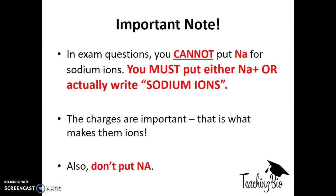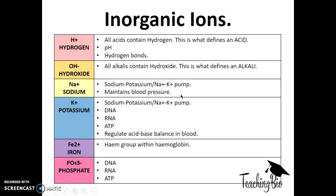In exam questions, if they ask you to talk about an ion, you can't put Na for sodium ions because Na is just sodium. You have to put Na+ or write sodium ions. You might forget what the charge is on the iron ion in hemoglobin—it's Fe2+. So to prevent risking the mark by putting Fe3+, which also exists, just putting iron ion will be fine.